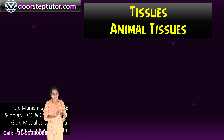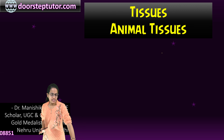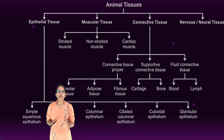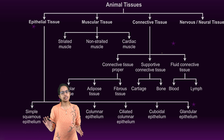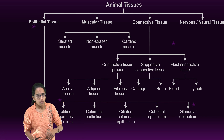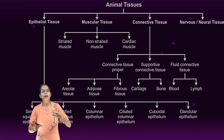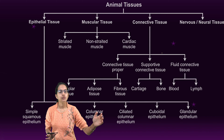Let's understand animal tissues. Animal tissue classification is one of the simplest classifications to understand. We can broadly classify animal tissues as epithelial tissues, muscular tissues, connective tissues, and nervous tissues. Each of these tissues we would understand in separate detail in advanced lectures, but here we would have an overview about each of the tissues.